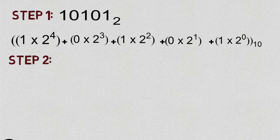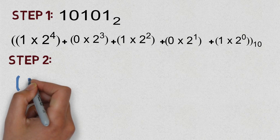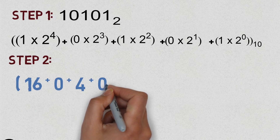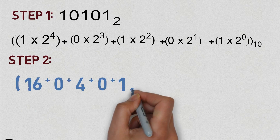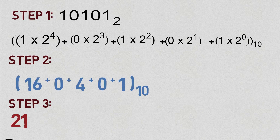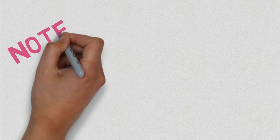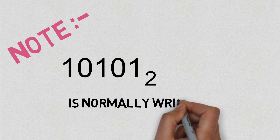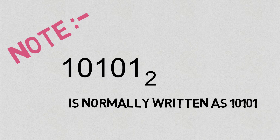Simplifying, we get 16 + 0 + 4 + 0 + 1 = 21 in base 10. So 10101 base 2 is equal to 21 base 10. In most situations, 10101 base 2 is simply written as 10101 without writing the 2 as the base.